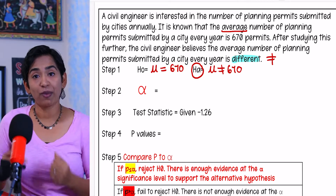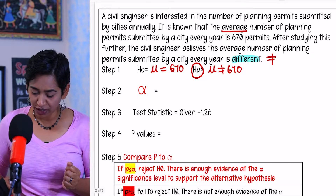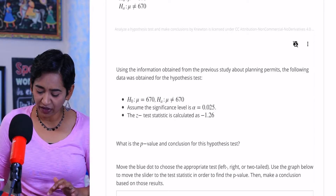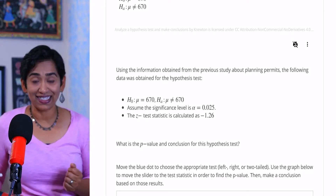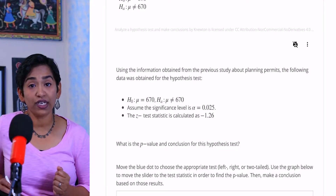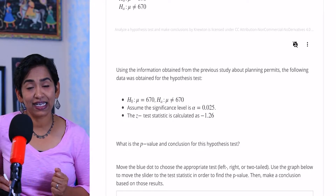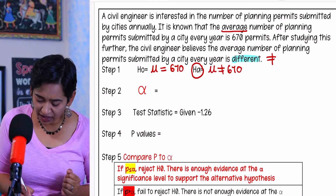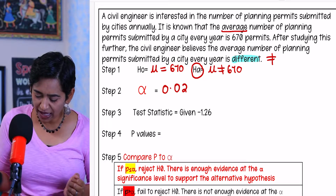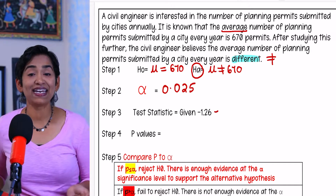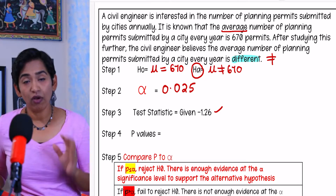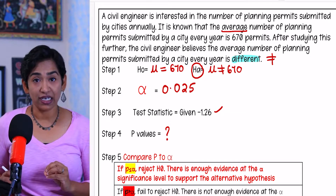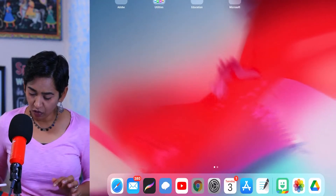You know it's a two-tailed test because your HA is not equal to. Once you plug this in, the second set of information automatically pops up. Your alpha and your test statistic are given to you. In my case, the alpha is 0.025 and the test statistic is negative 1.26. My next step is to find the p-value using the sliders.